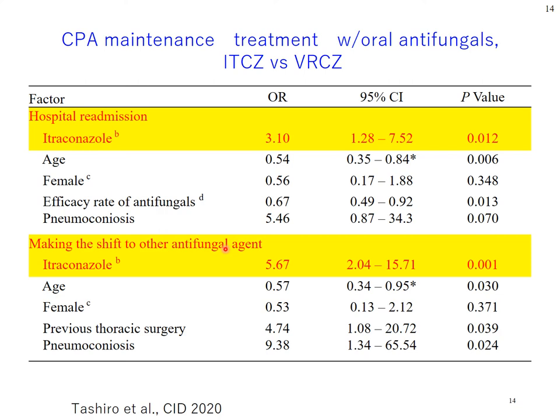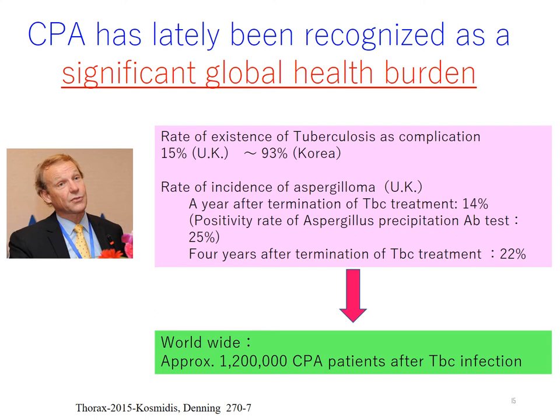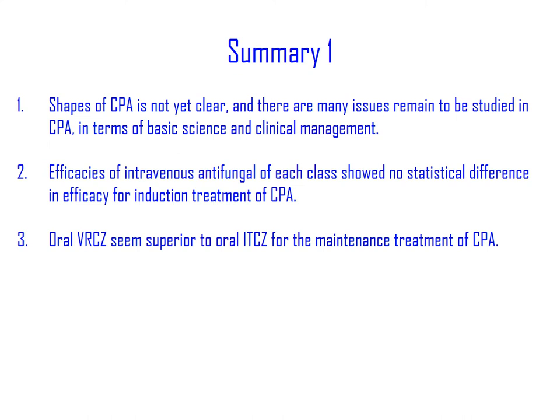We believe continuous studies on CPA are important because CPA seems a kind of global health issue. Considering CPA can easily occur in patients with cured TB, more than one million patients are estimated to exist. They need more effective and cheaper interventions, as Dr. Denning has stated. This is a summary of what we have covered, and I want to move on to another topic.